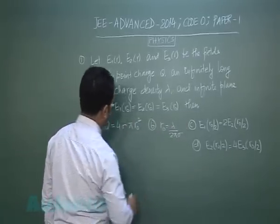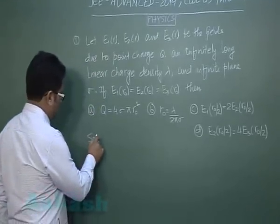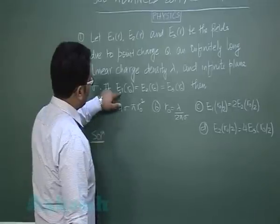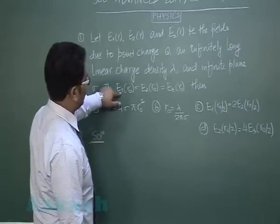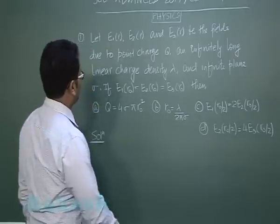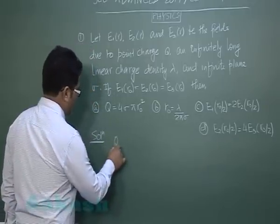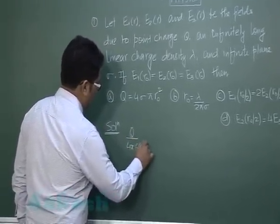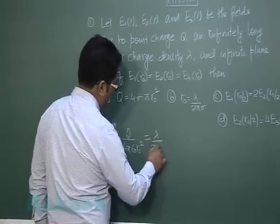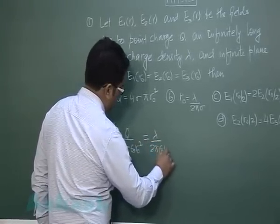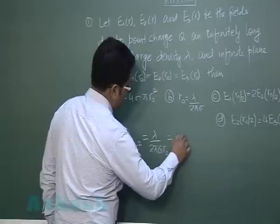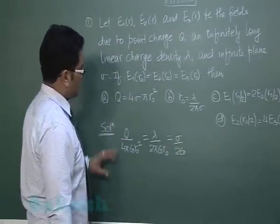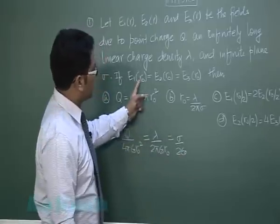Based on that, we need to choose the option. Let's solve by equating the electric fields at r0: q/(4π ε₀ r0²) = λ/(2π ε₀ r0) = σ/(2ε₀). This condition is derived from what's given in the question. From this, you can easily relate q, λ, and σ.